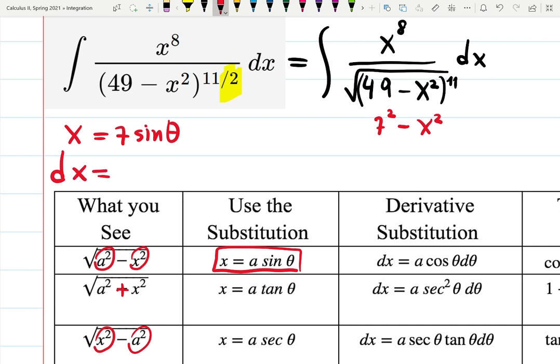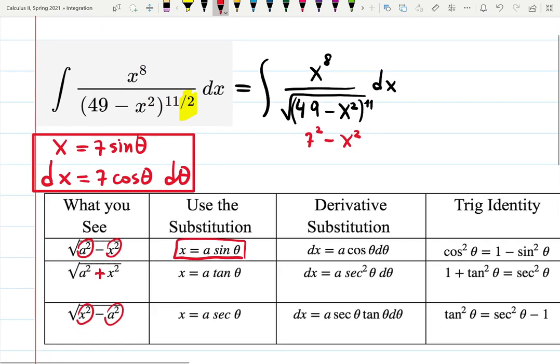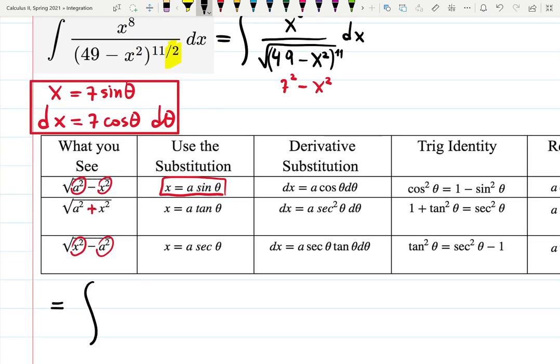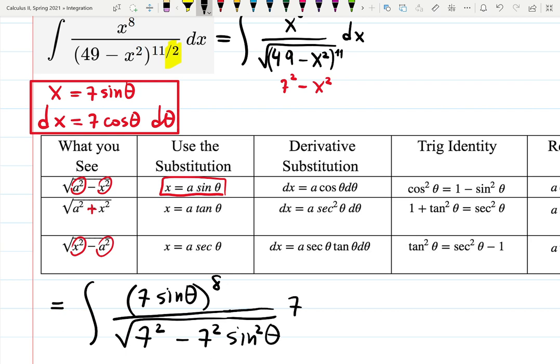In this case I'm going to choose x to be 7 sine theta. So it's case number one. Then let's find dx. dx will be 7 cosine theta d theta. And this is what we're going to plug in the integral. So wherever you see x, plug 7 sine theta; dx, 7 cosine theta.